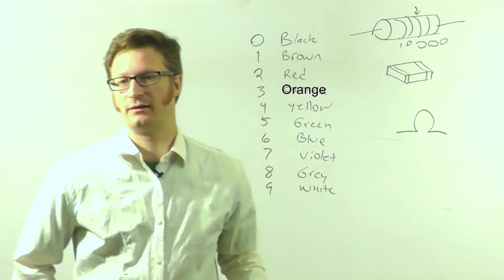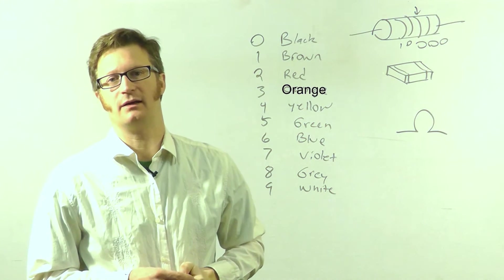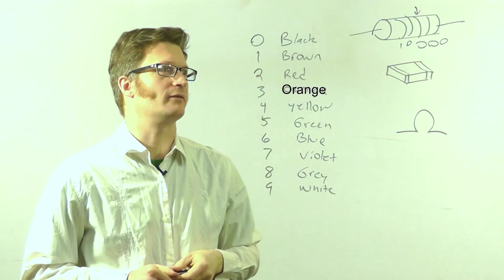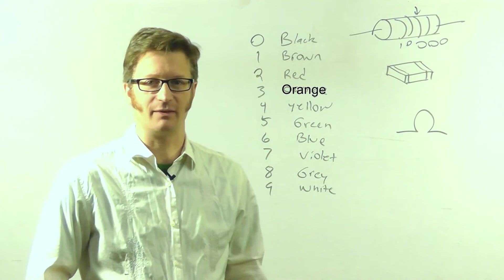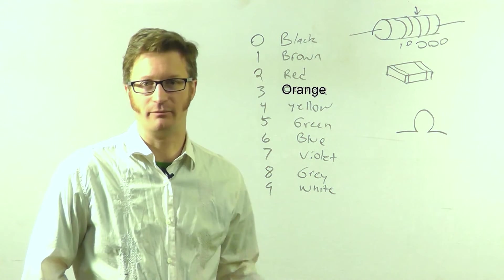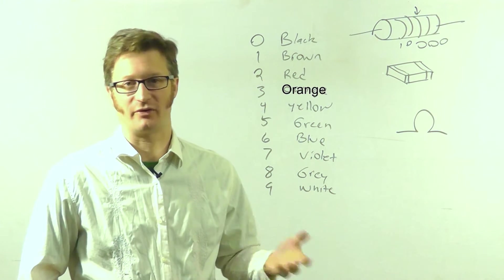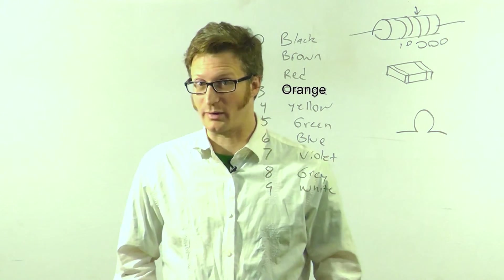The fourth color band indicates the tolerance of the resistor. And typically all of your resistors in an assortment will be of the same tolerance. So I won't go over that here, but basically standard tolerances might be 1% or 5% or 0.1%.